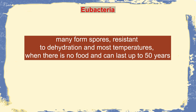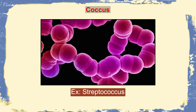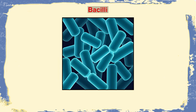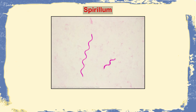When there is no food, bacteria are capable of surviving for up to 50 years. Eubacteria mostly exist in three different shapes: cocci, which are sphere-shaped (example: Streptococcus); bacilli, which are rod-shaped (example: Lactobacillus); and spirillum, which are spiral-shaped (example: Spirillum).